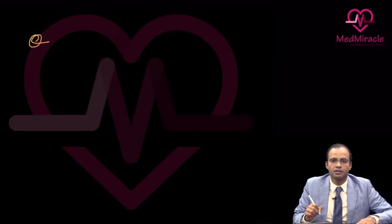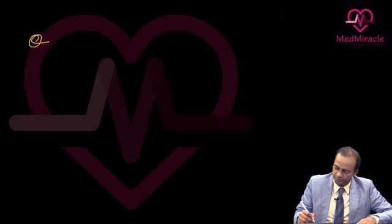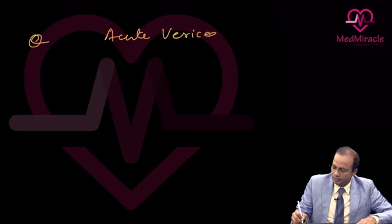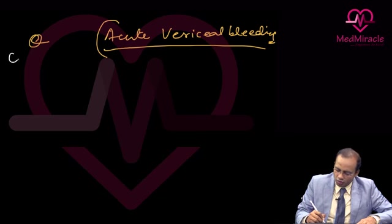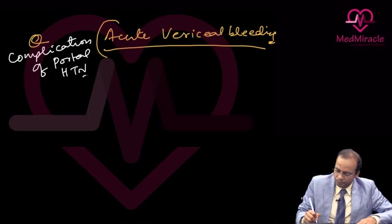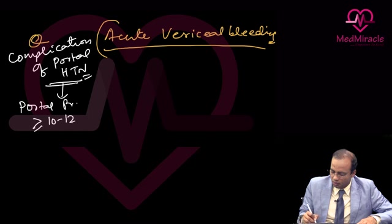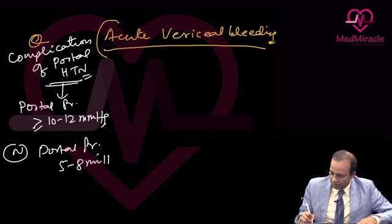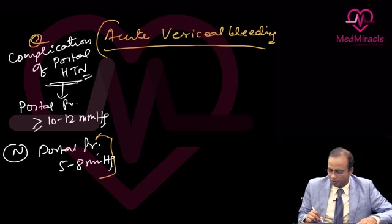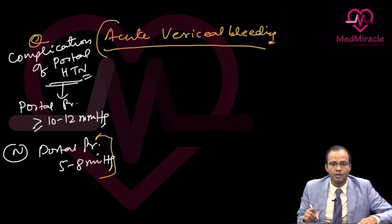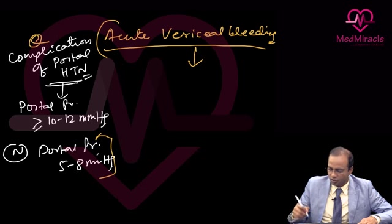Acute variceal bleed is a complication of portal hypertension. Portal hypertension is defined as portal pressure more than or equal to 10 to 12 millimeter of mercury. Normal portal pressure is 5 to 8 millimeter of mercury. Acute variceal bleed is an emergency situation.